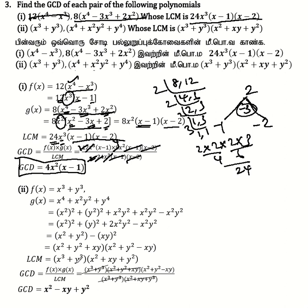LCM of x^q plus y^q, which is x²a² plus xy², OK. Now I'm asking for GCD. Let's try the formula: f of x times g of x divided by LCM. With g of x, it's x⁴ plus y⁴. Here, x power 4 is x squared whole square, and y power 4 is y squared whole square. Now you can add plus x²y² and subtract x²y². That is x² plus y².